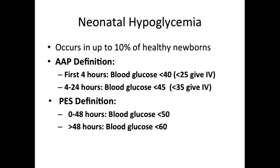Neonatal hypoglycemia occurs in up to 10% of healthy newborns. The AAP definition defines hypoglycemia within the first four hours of life as a blood glucose less than 40, and hypoglycemia between four to 24 hours of life as a blood glucose less than 45. This reflects the decline in serum glucose that normally occurs after the first two to three hours after birth. In contrast, the Pediatric Endocrine Society defines hypoglycemia within the first 48 hours as a blood glucose less than 50, and hypoglycemia as less than 60 beyond 48 hours.